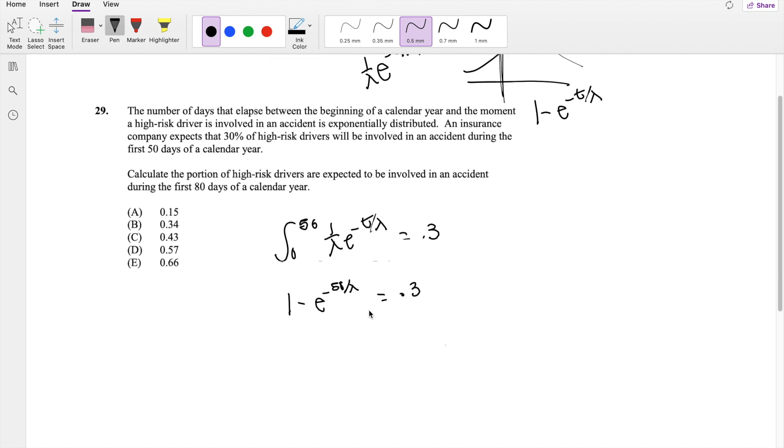Alright, so this is perfect. This is what we need to find lambda. So bringing this to the other side, this is going to be 0.7 = e^(-50/λ).